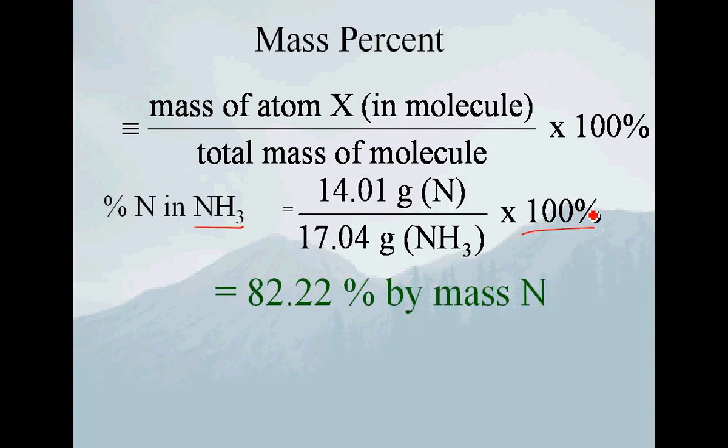Now, you should know that if I wanted to calculate the mass percent of hydrogen, since there's only nitrogen and hydrogen in there, I could simply subtract this 82.22 from 100, and that would give me the mass percent by hydrogen, which becomes important a little bit later.